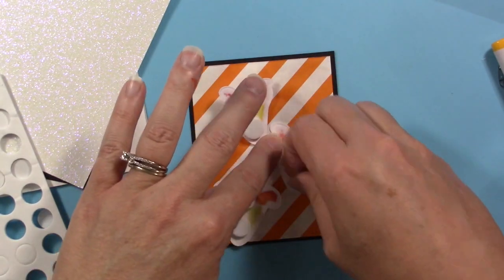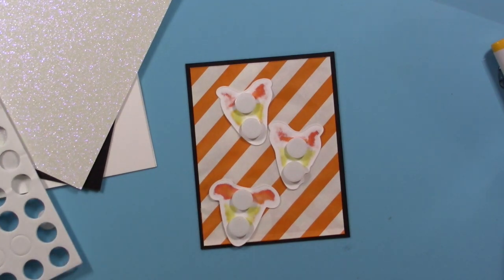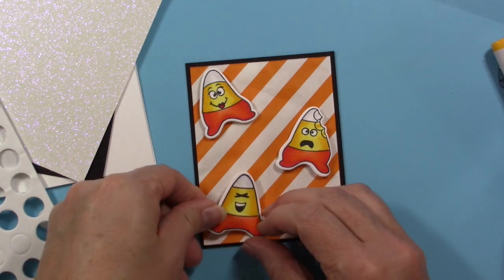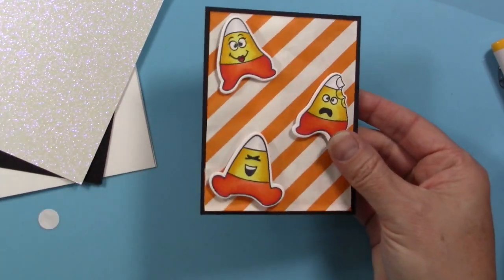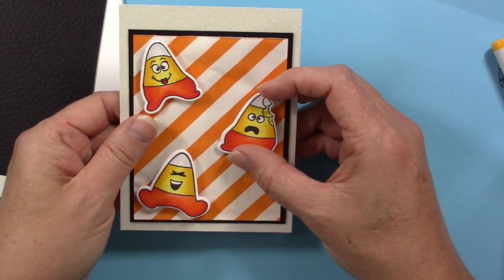These cute little candy corns look cute no matter how you color them. So I'm adding foam dots to the back and adhering those to the envelope. Then I'm just going to simply layer these cardstock pieces together using my tape runner.